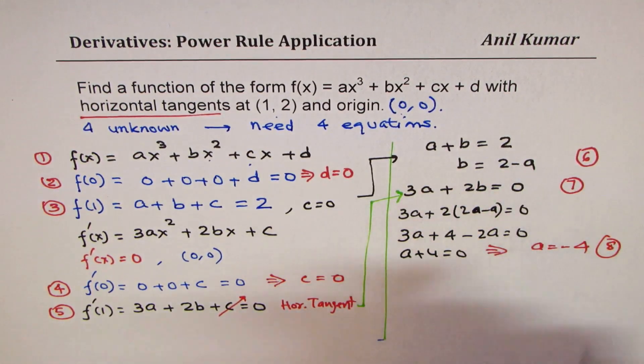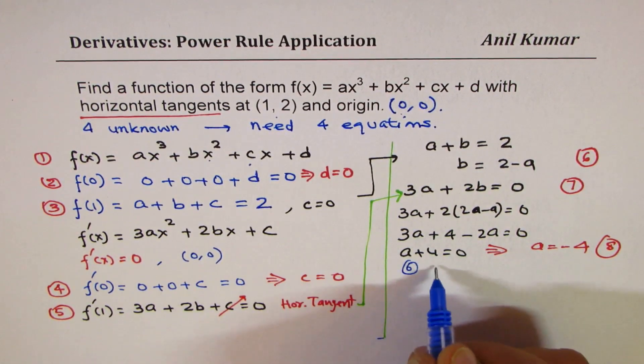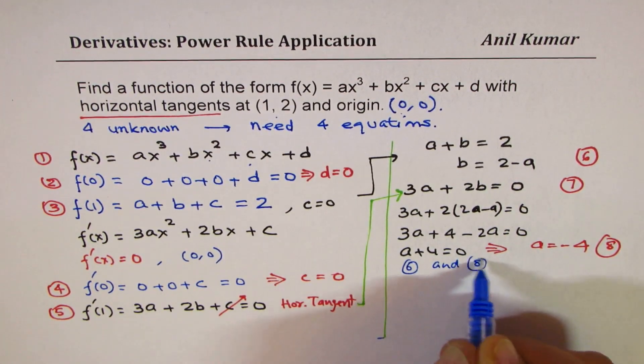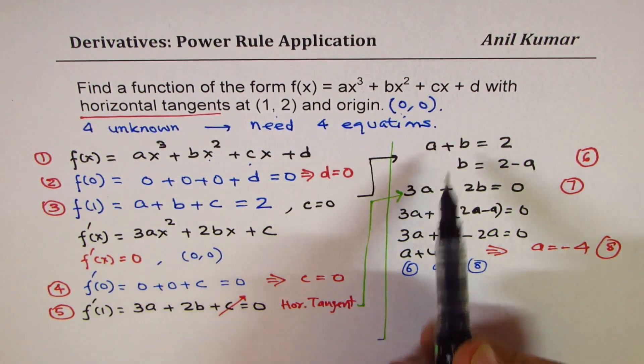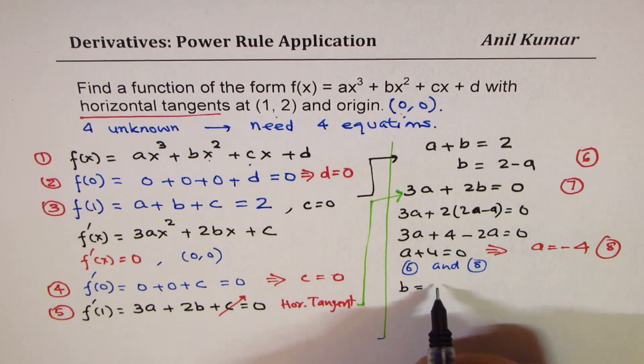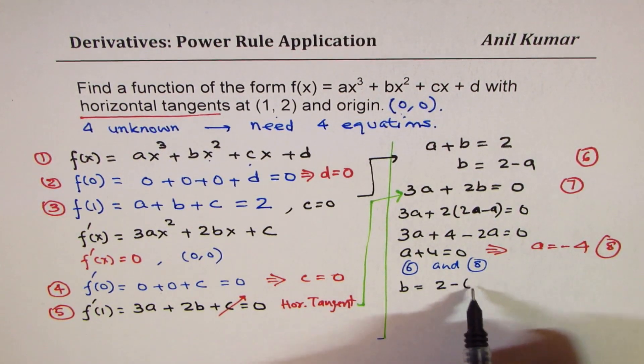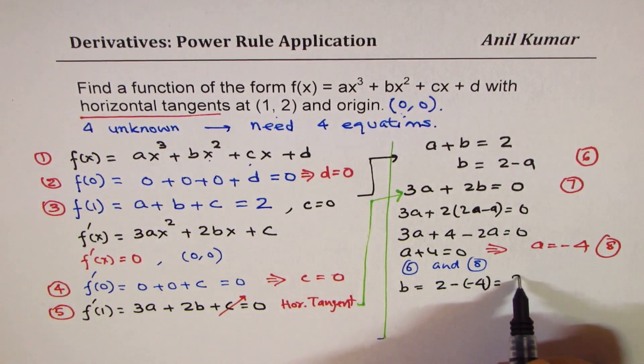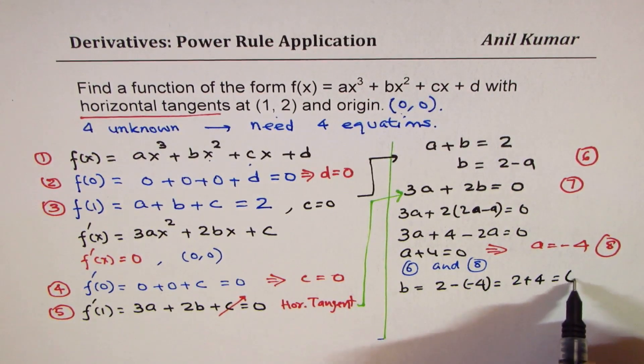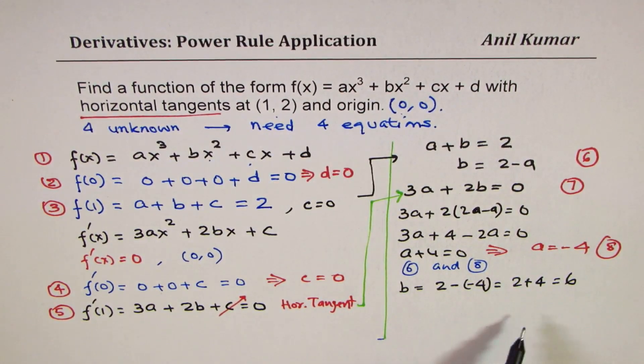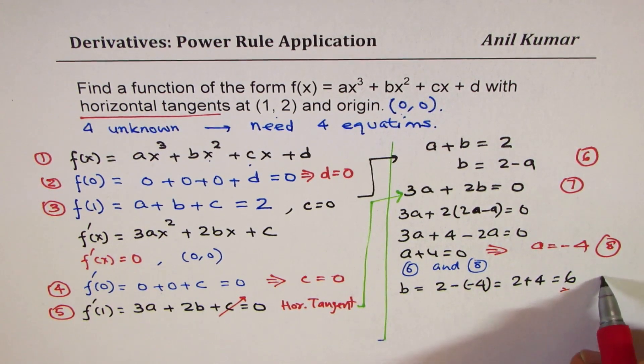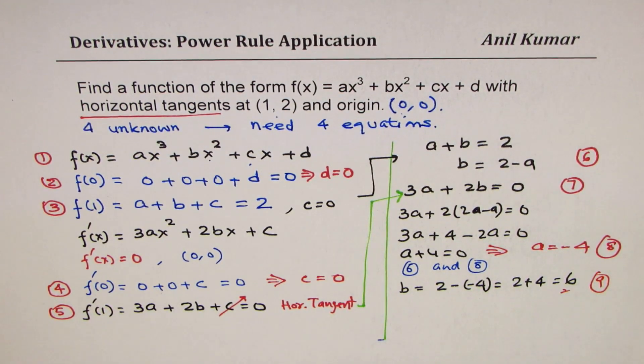So if a is -4, let's call this as equation 8. We'll substitute this in equation 6. So from equation 6 and 8, what do you get? b is equal to 2 minus minus 4, which is 2 plus 4, which is 6. So we get b as 6.